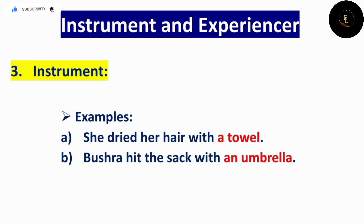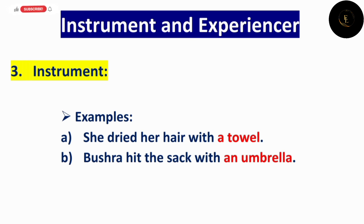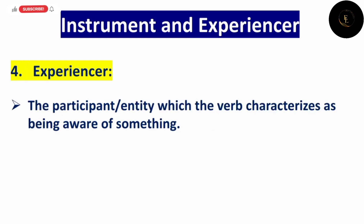'She dried her hair with a towel' — یہاں action ہے بال سکھانا، اور instrument کیا ہے؟ Towel ہے۔ Towel کی مدد سے hair کو dry کیا جا رہا ہے۔ 'Bushra hit the sack with an umbrella' — یہاں Bushra agent ہے، sack theme ہے کیونکہ hit کیا گیا، اور umbrella کی مدد سے action perform کیا جا رہا ہے، so umbrella is instrument۔